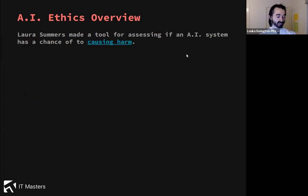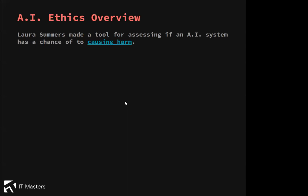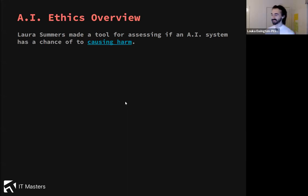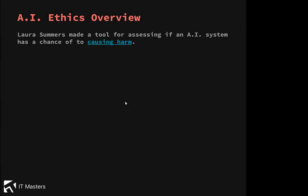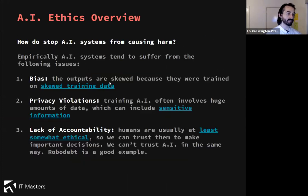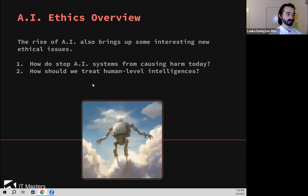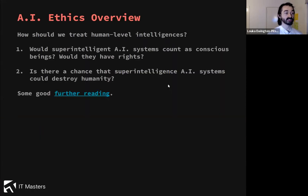So before we go on to the second limb — can anyone remind me what it is? We had the first limb, which was: how do we stop AI systems from causing harm now? The second one is: how do we treat intelligences that are starting to reach human level? That's the second limb. The second one is more philosophical: what will happen when they start being human level?